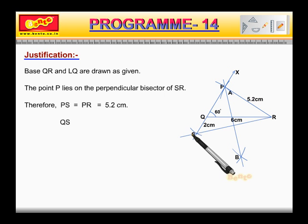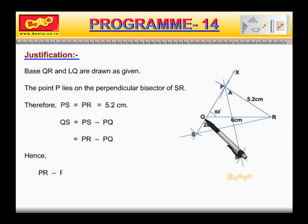QS is equal to PS minus PQ, which is equal to PR minus PQ. Hence, PR minus PQ is equal to 5.2 minus 3.2, which gives us 2 cm.